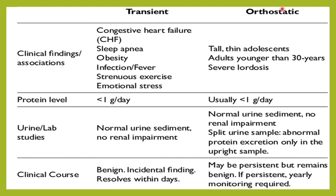The difference between transient and orthostatic proteinuria: transient proteinuria occurs when the patient has an infection, fever, strenuous exercise, emotional stress, or congestive cardiac failure. Orthostatic proteinuria is seen in young adults, particularly those with severe lordosis of the spine. In orthostatic proteinuria, when the patient remains in a supine position the urine sample shows no protein excretion, but whenever the patient is in an upright position, urine proteins are detected.